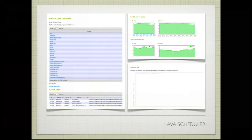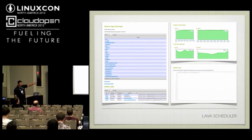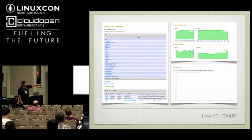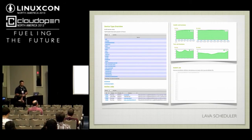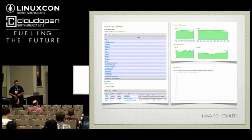Here's what the scheduler looks like. You can see devices listed by device type — if you click the links you'll see the actual devices associated with it. Below you can see the jobs that are running, and off to the right are our scheduler reports showing the health of our devices and how many jobs are passing or failing per day or per week. A new feature: you can submit a job simply through the web UI — so if you're on your iPad and want to submit a job, we enable that.